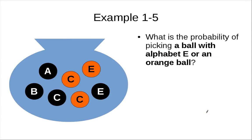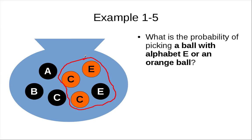Let's continue with another example. What is the probability of picking a ball with alphabet E or an orange ball? You have to find all the balls with these properties — it's an 'or' condition. So, an orange ball or a ball with alphabet E — there are four of them, so the probability is four over seven.